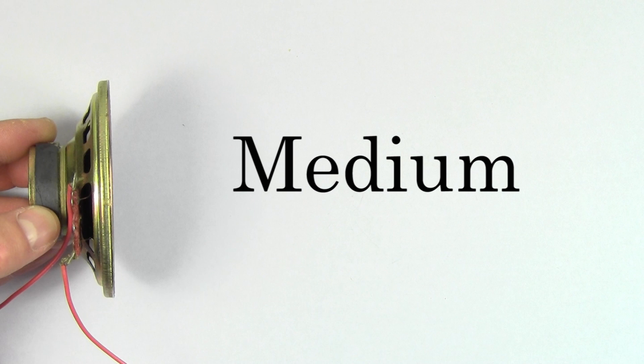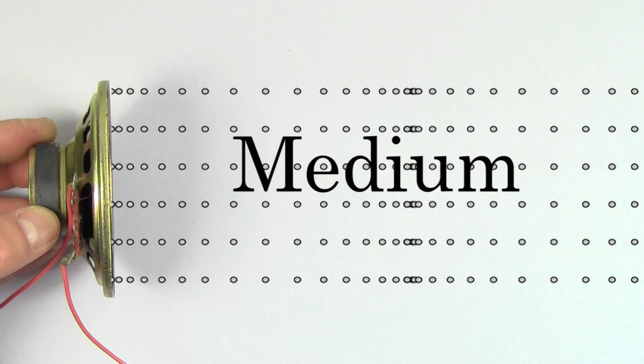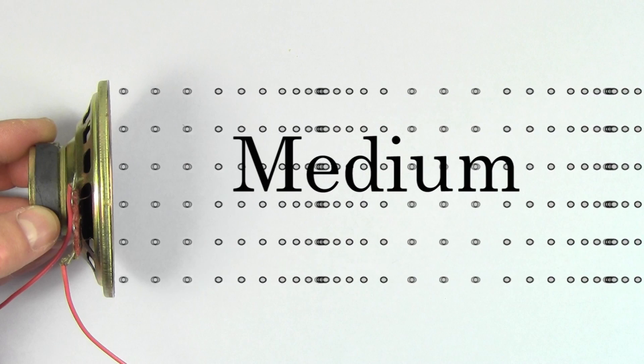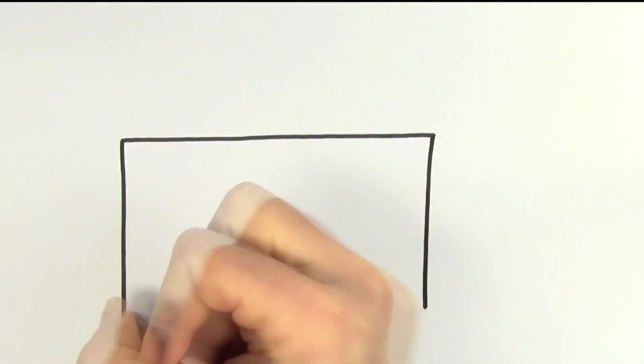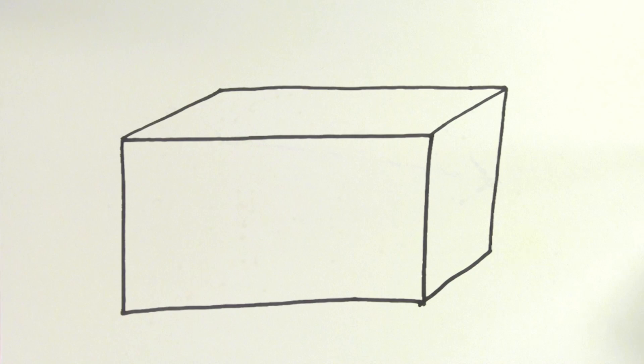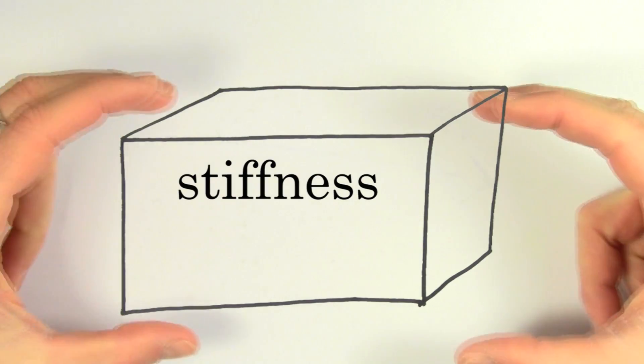To change the speed of sound, you have to change the properties of the medium that that sound wave is traveling through. And there's two main factors about a medium that will determine the speed of the sound wave through that medium.